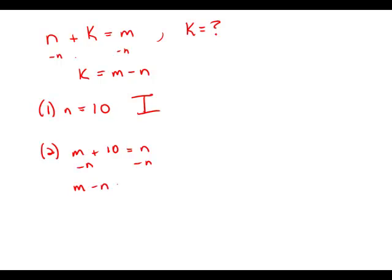I get m minus n plus 10 equals 0. Subtract 10 from both sides, m minus n equals negative 10. And in fact, that's exactly what k would equal. So this statement by itself is sufficient to allow us to determine the value of k.